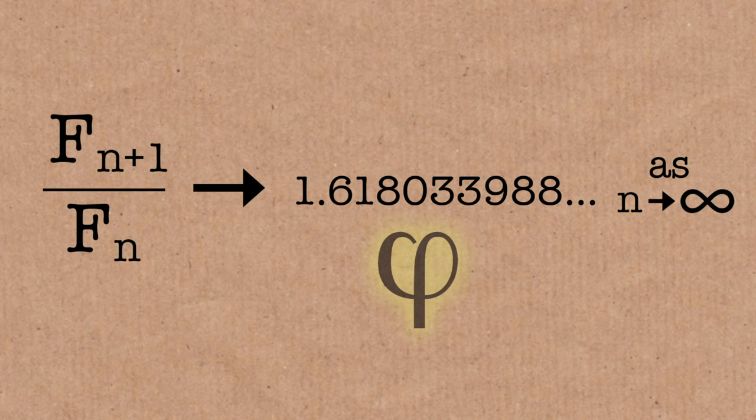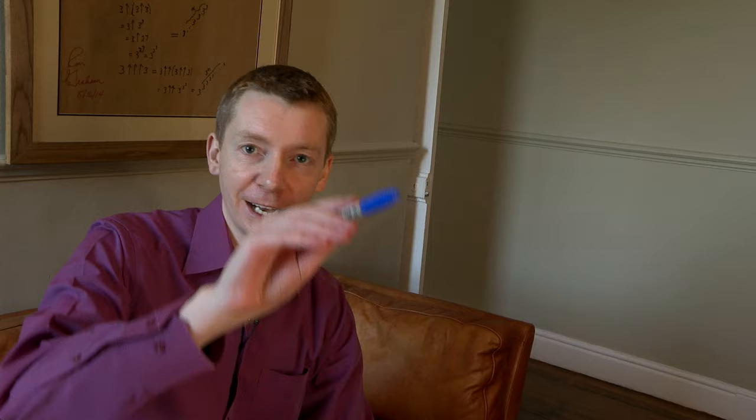But you can use that to estimate. Let's say you've got a really big Fibonacci number and you don't know what it is, you can use the golden ratio. The idea is every time we're multiplying by the golden ratio to get the next one up. So you can kind of reverse engineer your numbers?